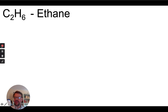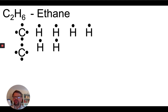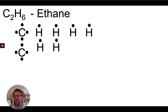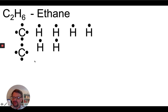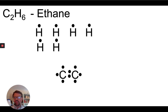C₂H₆ is ethane — two carbons and six hydrogens — where each carbon again has four valence electrons, and each hydrogen has one valence electron. Another way to approach this is to tally the total number of valence electrons and keep track as you use them up until you run out. In this combination, you have a total of 14 valence electrons: eight from the carbons and six from the hydrogens. We'll put the carbons in the middle and connect them with a single bond to start, which uses up eight of those 14 valence electrons.